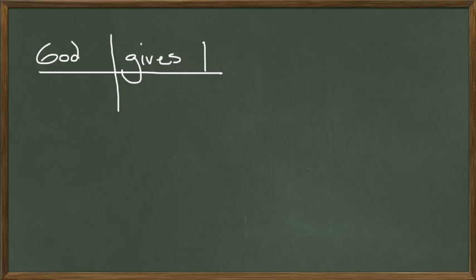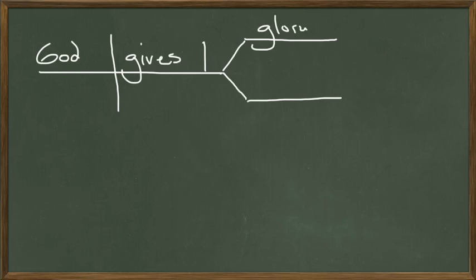Now we're going to add a direct object, but we have two direct objects. A direct object always goes after a straight line to the main line, and then we're going to split the direct objects because there are two of them — on what my students in the inner city school where I teach constantly call a 'price tag.' So God gives 'the glory' and he gives 'the victory.'